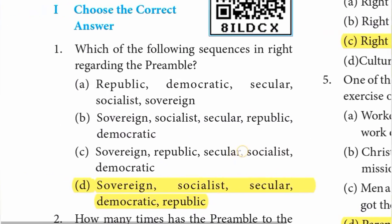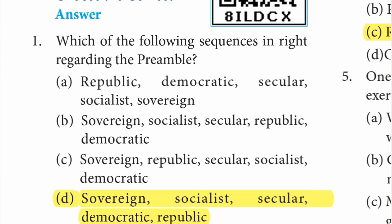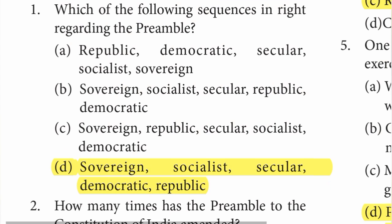Choose the correct answer. First one: which of the following sequences is right regarding the preamble? The answer is D option — Sovereign, Socialist, Secular, Democratic, Republic. D option is the right answer for the right sequence regarding the preamble.